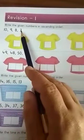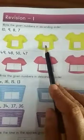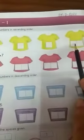See, what we have to write first? First we have to write the smaller number, then big, bigger and the biggest one.